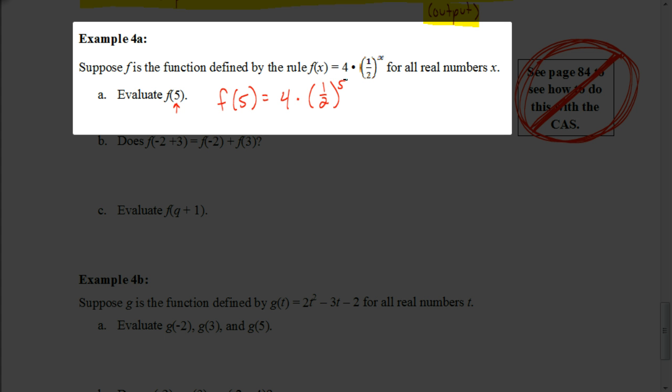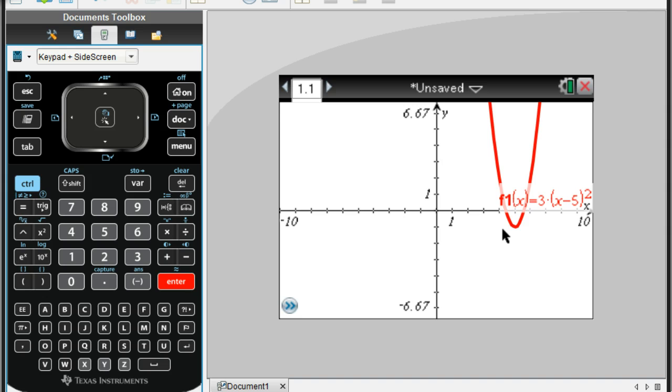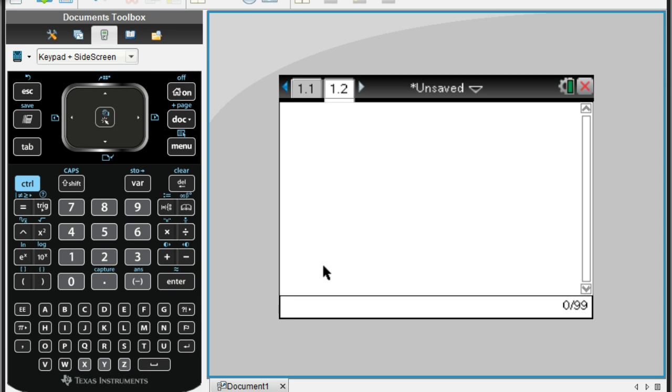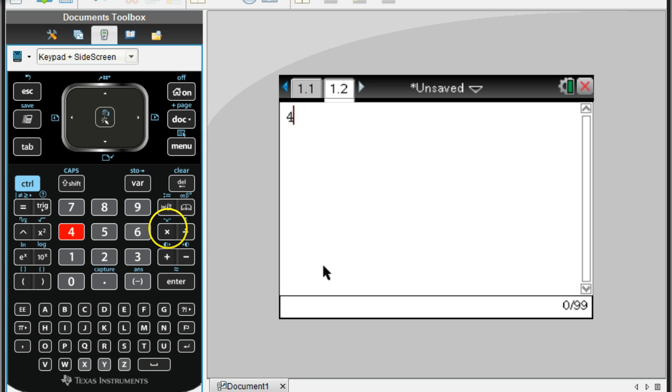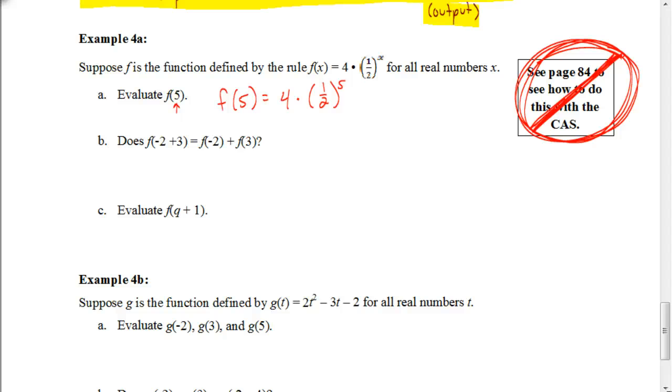So, we're just going to type this in on our calculator exactly as we see it. So, if we go to a calculator screen, we're going to type in 4 times 1 half. So, we do 1 divided by 2 in parentheses. To change the exponent to 5, we do this little caret button. It looks like an arrow pointing up in the air. Type in 5, hit enter, we get 0.125, or maybe your calculator left it as a fraction as 1 eighth. So, that's your answer.